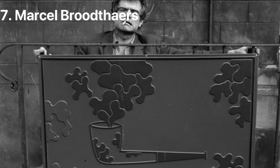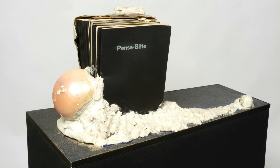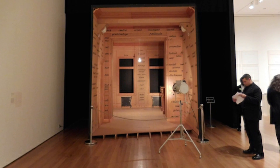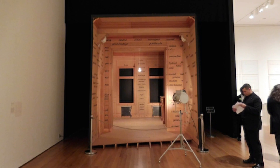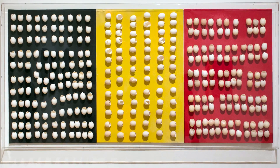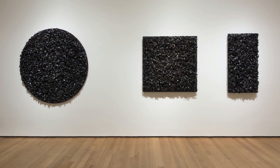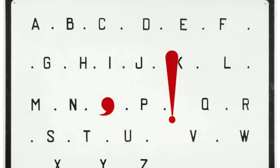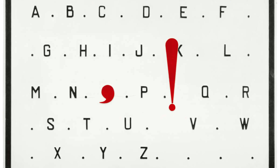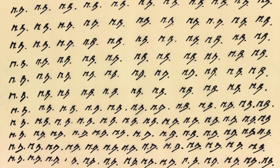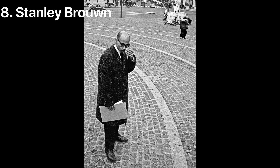Number seven: Marcel Broodthaers. Born in 1924 in Brussels, Belgium, Broodthaers passed away in 1976 in Cologne, Germany. The Belgian artist was originally an unsuccessful poet who turned to conceptual art, aiming to create satirical but poetic artworks. His works are marked by the use of ready-mades such as eggshells, mussel shells, chairs, and plants. Broodthaers used language to create a discrepancy between form and content, producing boundary-pushing artworks filled with humor and sharp criticism, encompassing sculpture, film, printmaking, books, and installation.